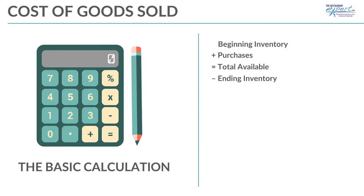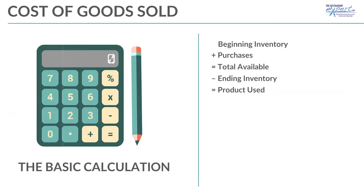Then at the end of the period — by the end of that Sunday or last day of the month, I would rather it be a Sunday — we count what's on the shelves for full value. Beginning inventory plus purchases equals total available, minus ending inventory gives me use. That is my cost of goods sold.